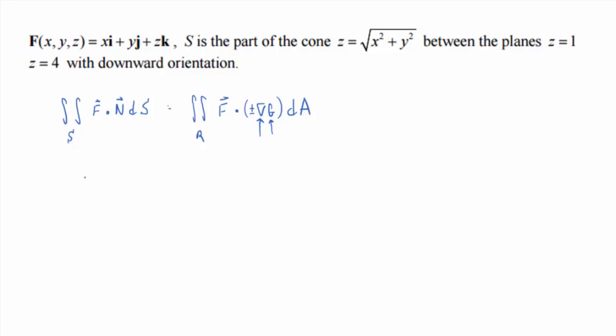And then we have to decide, oh, are we going to take the minus one or the plus one? Well, we want it to point down, generally, right? It's probably going to be the minus one, right? Depending on how you create G in the first place. So let me kind of do that off to the side. So the surface is related to what we call G, right?